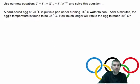Use our new equation: T - T_S = (T_0 - T_S)e^(-KT), and solve this question. A hard-boiled egg at 98°C is put in a pan under running 18°C water to cool. After five minutes, the egg's temperature is found to be 38°C. How much longer will it take the egg to reach 20°C?